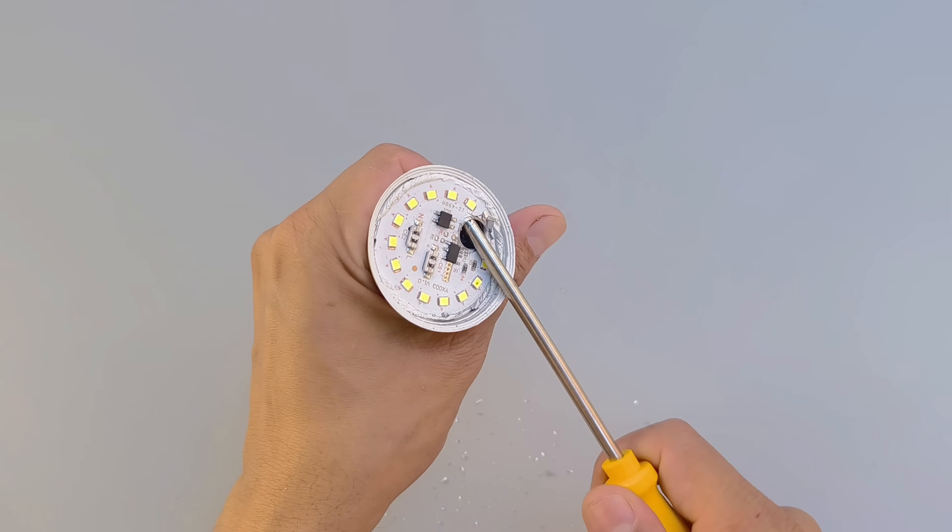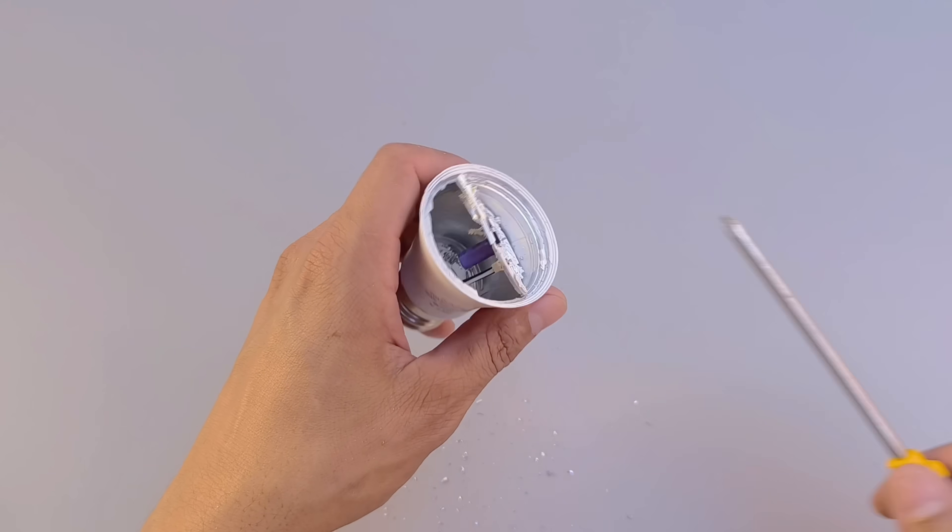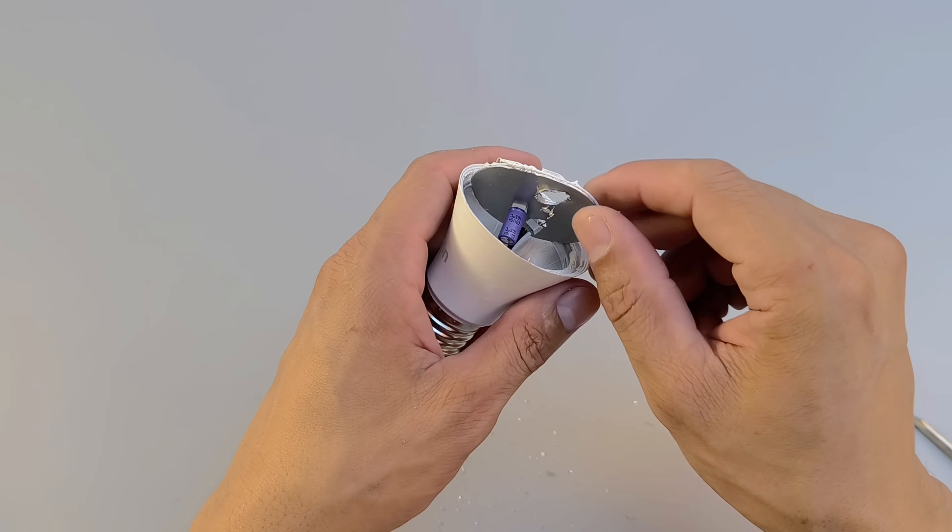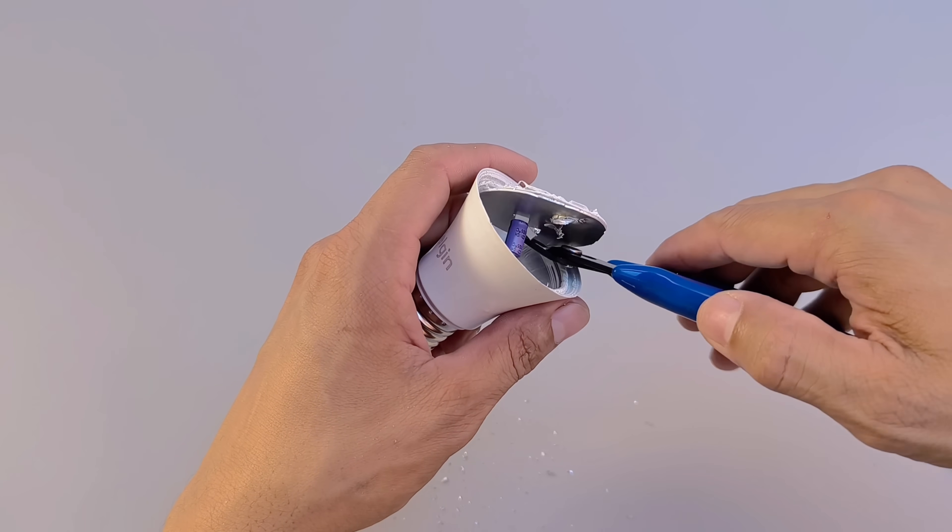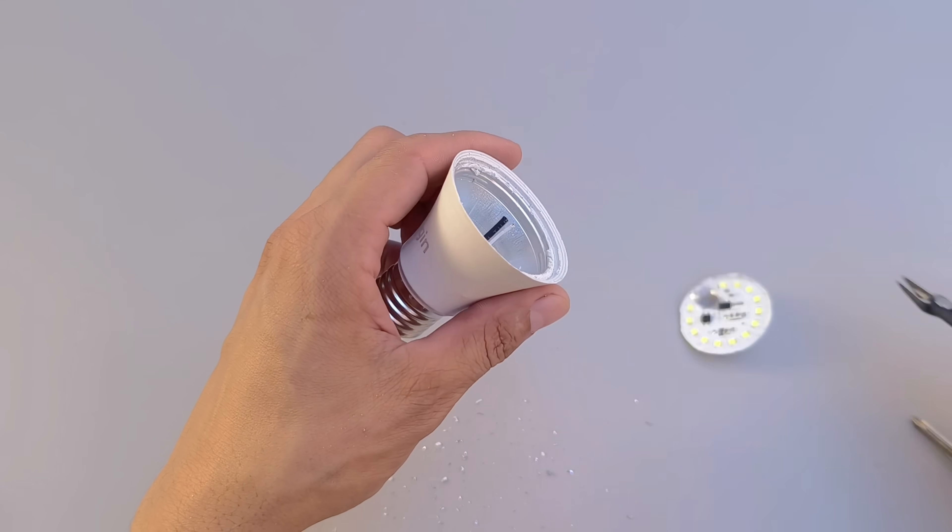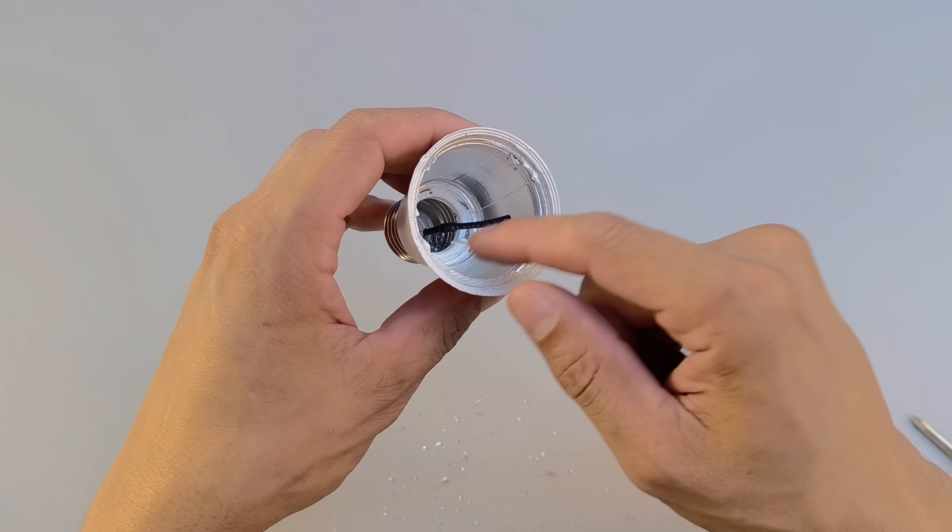Using tweezers or a small screwdriver, gently pull out the module. This part may vary depending on the bulb model, so adapt the technique if necessary, always prioritizing the safety and integrity of the parts you intend to use.